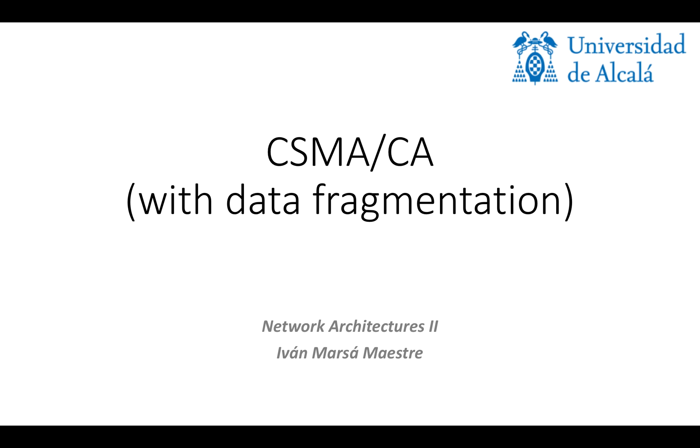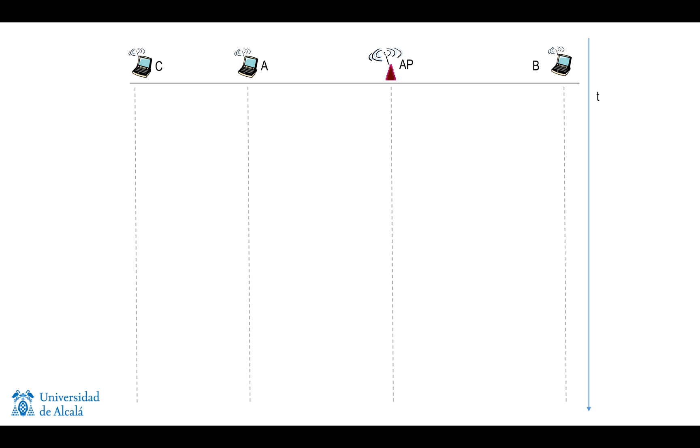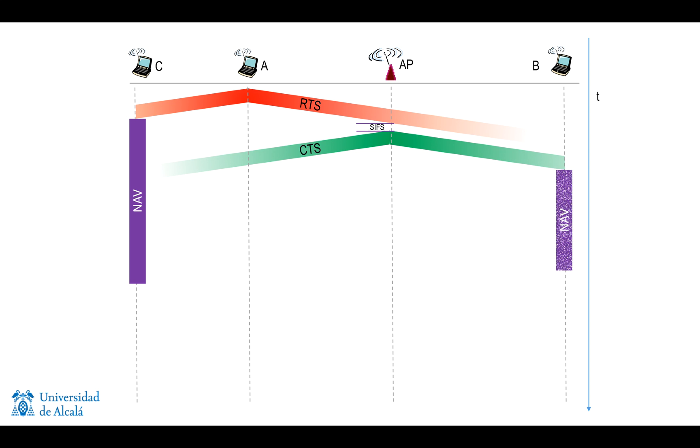The next case that we are going to study is CSMA/CA with data fragmentation. We're going to take the same example, but in this case we're going to assume that the first RTS arrives without collision. So C will inhibit itself, and the access point after a short time is going to send a clear to send, which provokes the inhibition of B. After A receives the clear to send, it's going to wait a short time and then send a fragment of the data, only a fragment of the data.